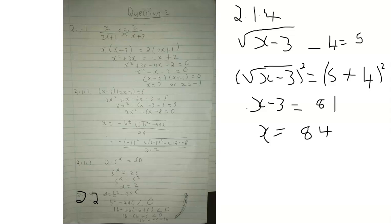For 2.1.3, it involved exponential laws. First, I divided both sides by 2 — so 50 divided by 2 gave us 25. I then changed 25 to an exponent: 5 to the power of 2. Applying the exponential law and equating exponents gave us x equals 2.